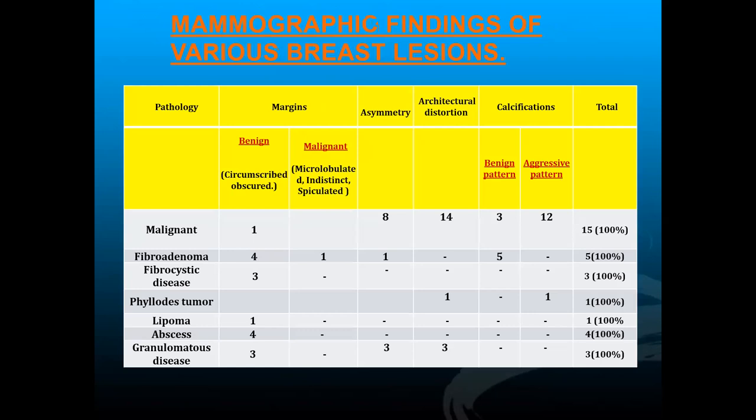Regarding mammographic findings: malignant tumors showed aggressive patterns of calcification, though benign-type calcification was also seen in some malignant patients. Architectural distortion was seen in 14 patients and asymmetry in 8 patients. Fibroadenomas mostly showed circumscribed margins. Fibrocystic disease showed microcystic circumscribed margins.